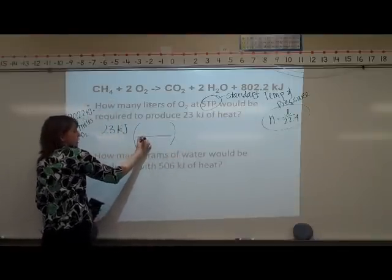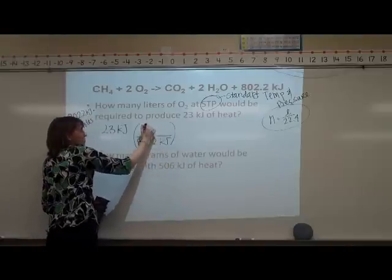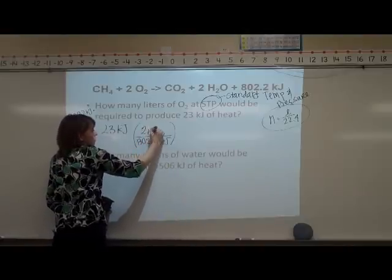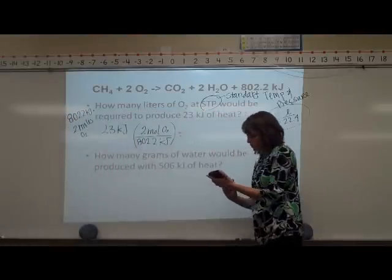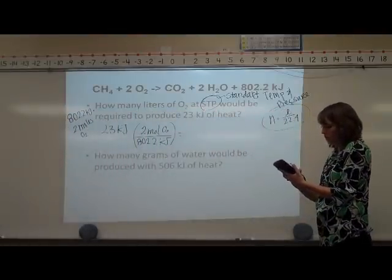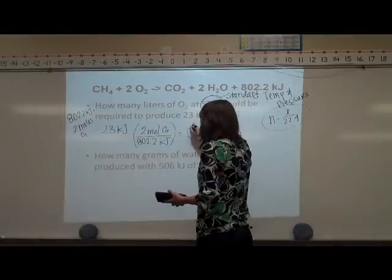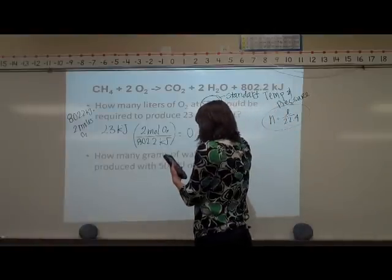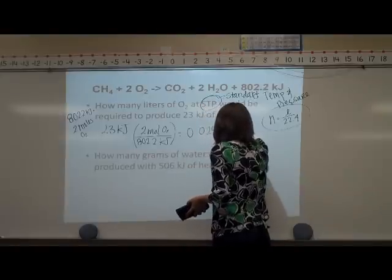We're going to write 802 on the bottom so our kilojoules will cancel, and we'll be left with moles on top. We're going to take our 2 moles of O₂ on top. Take our 23, divide it by 802.2. We'll be left with 0.029 moles of O₂.